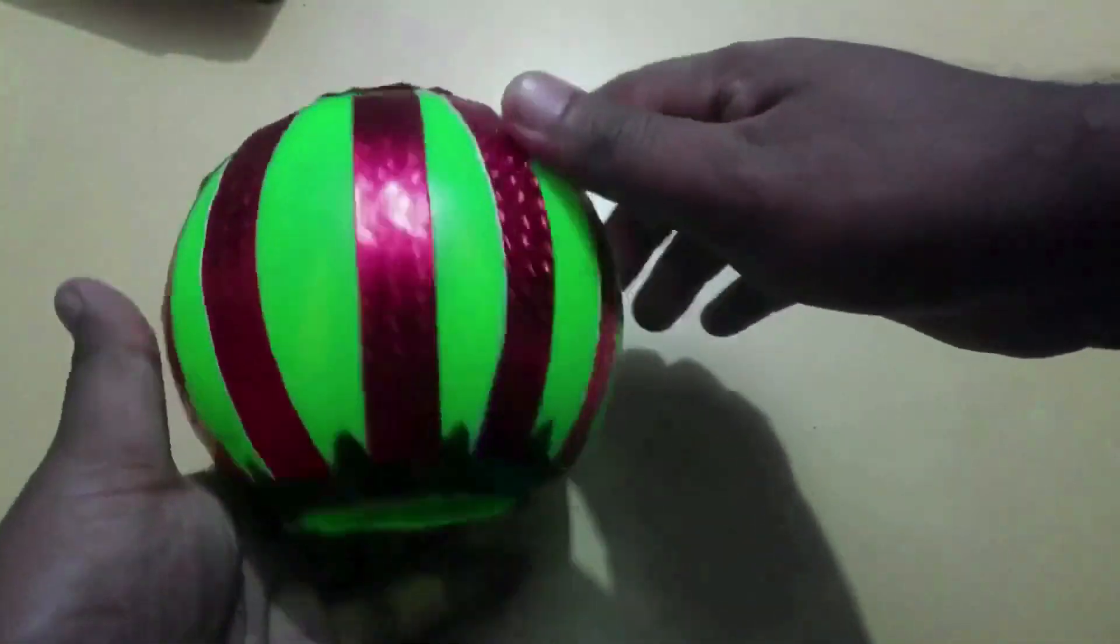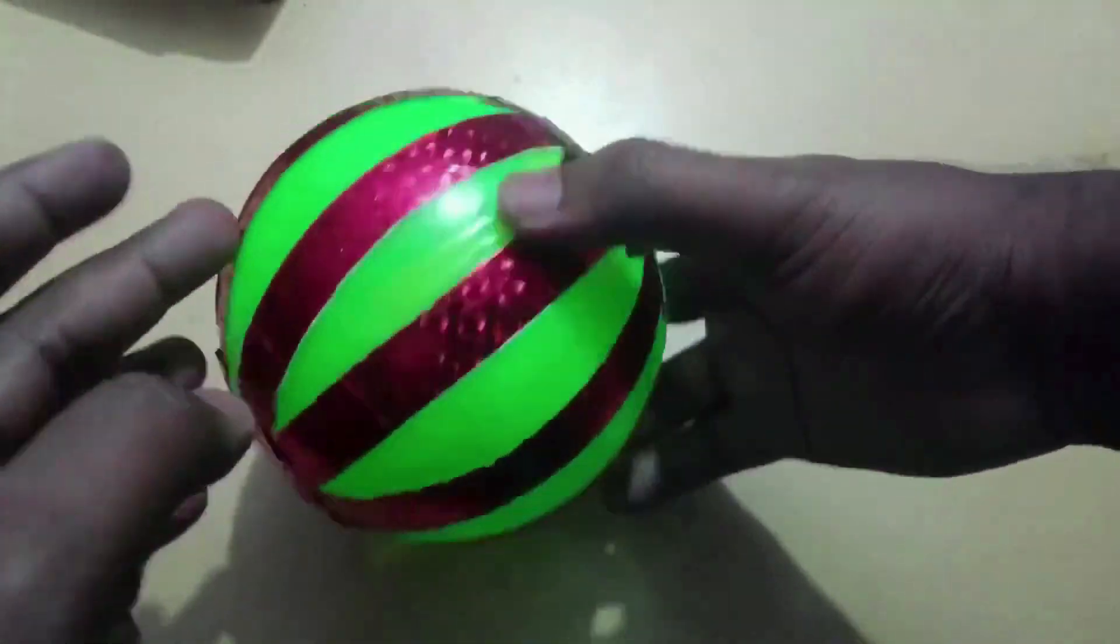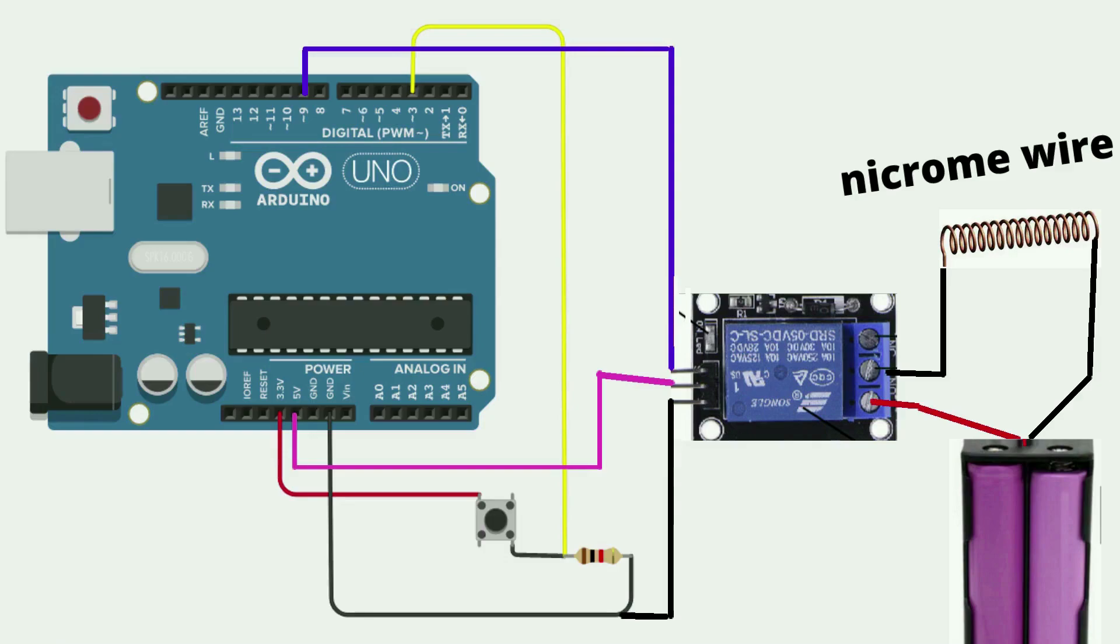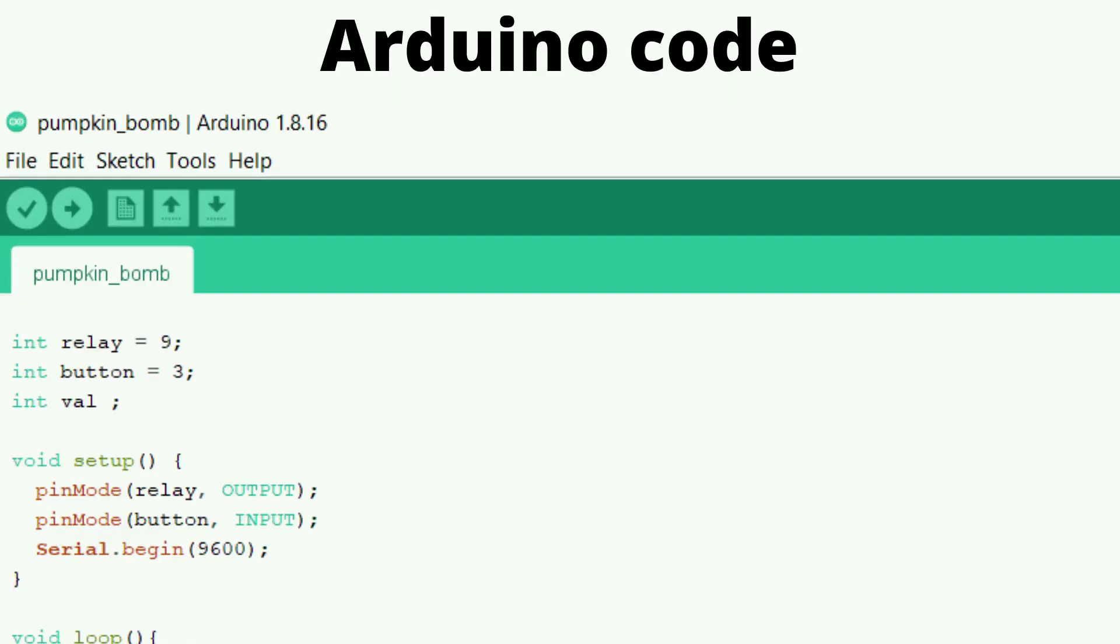Now the design of the pumpkin ball is ready. This is the circuit diagram we need. After completing the circuit, upload the Arduino code.